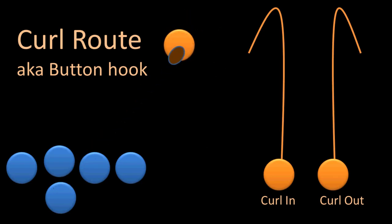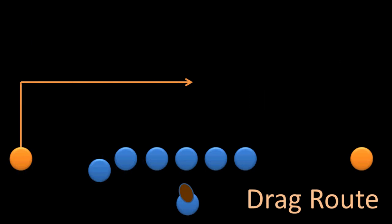The next few routes are mirrors of each other. Here we have the drag route, which means that the receiver will run forward and then turn 90 degrees and run across the field, parallel with the line of scrimmage. And just like we saw with the curl route, the distance that the receiver runs before he turns could be any distance.